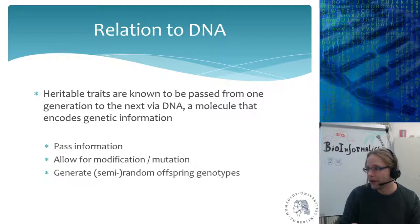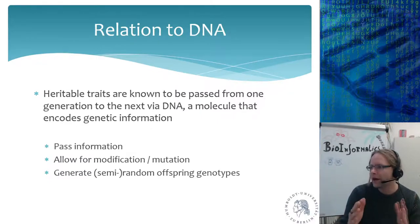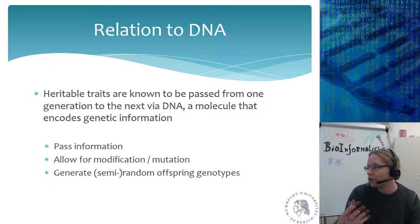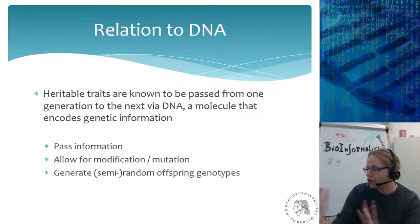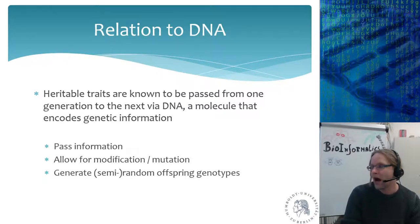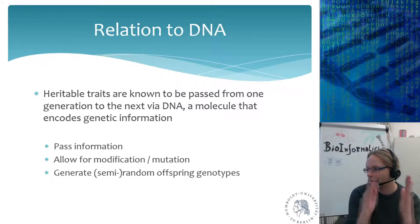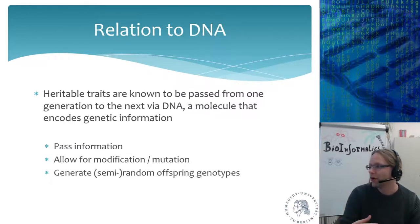The relationship to DNA is clear: heritable traits are passed from one generation to the next via DNA, which encodes genetic information. DNA also allows for modification and mutations — a novel mutation could cause R to be larger than S, since we assume nothing changes from parent to offspring generation. DNA generates semi-random offspring genotypes because you get half your genome from your father and half from your mother, and there's also recombination during meiosis.